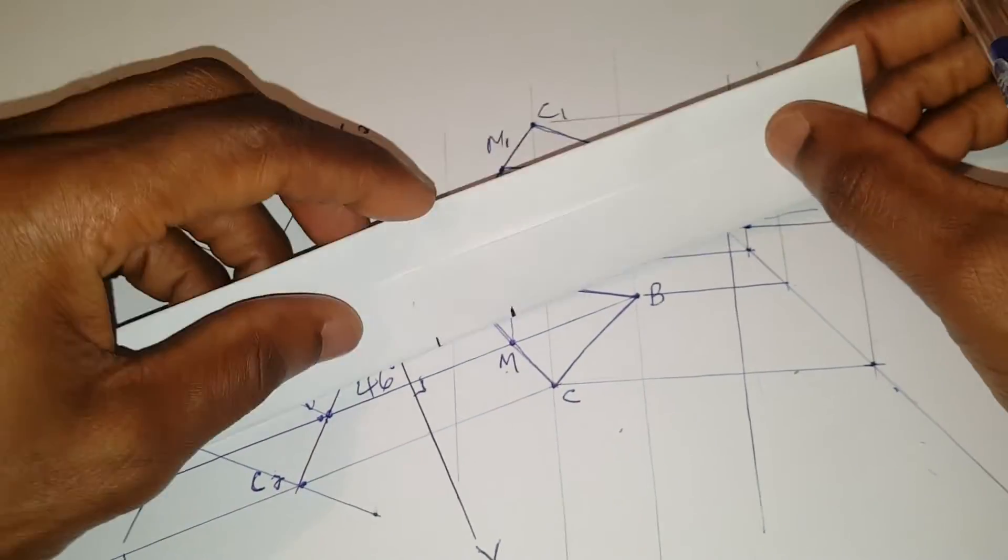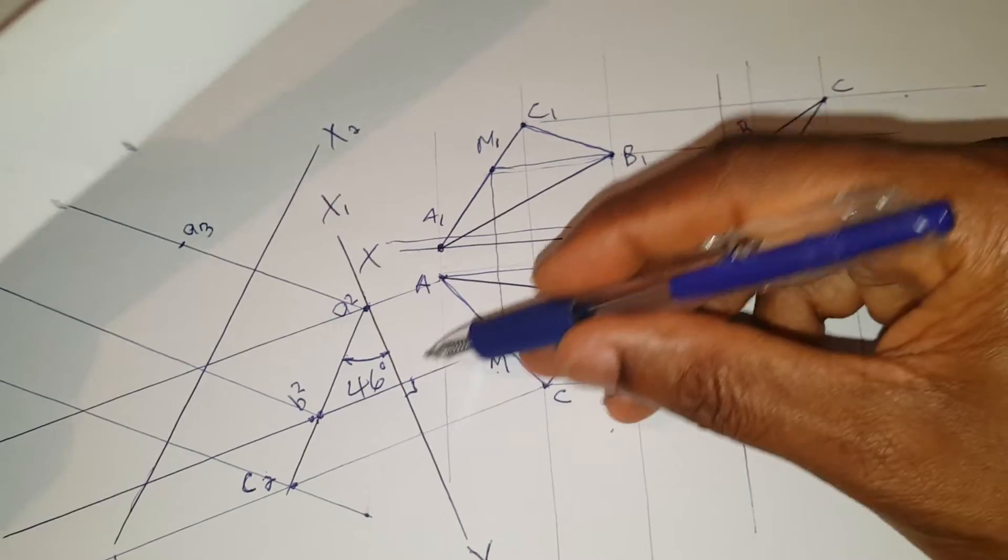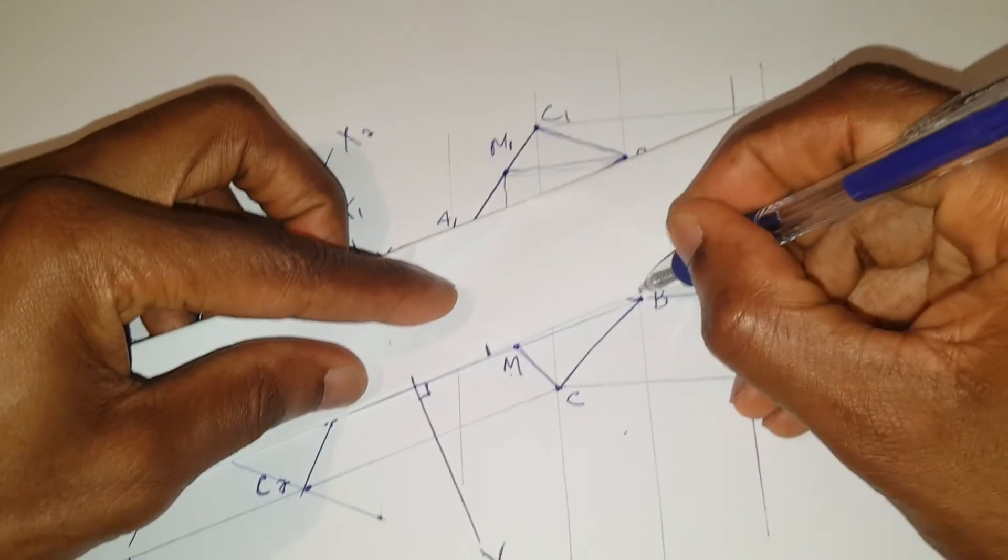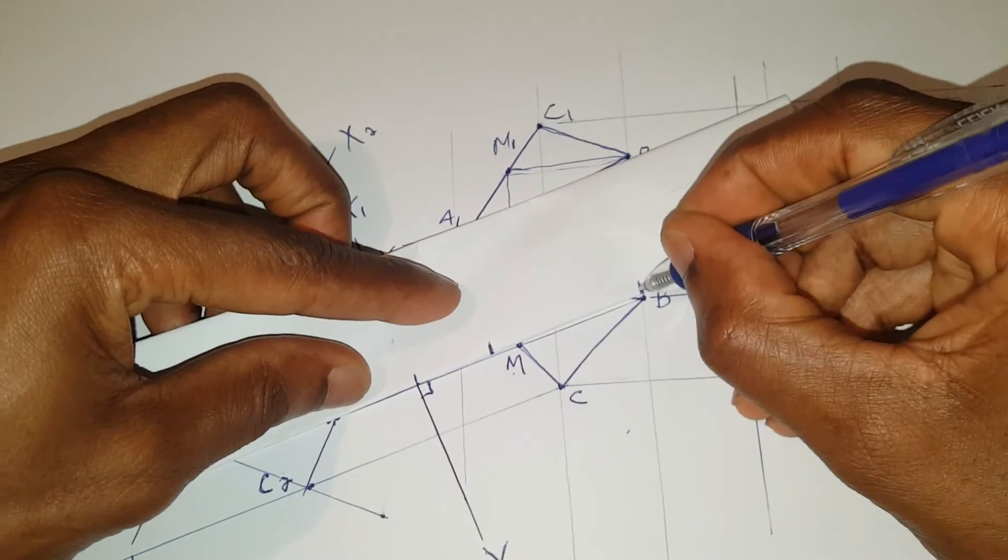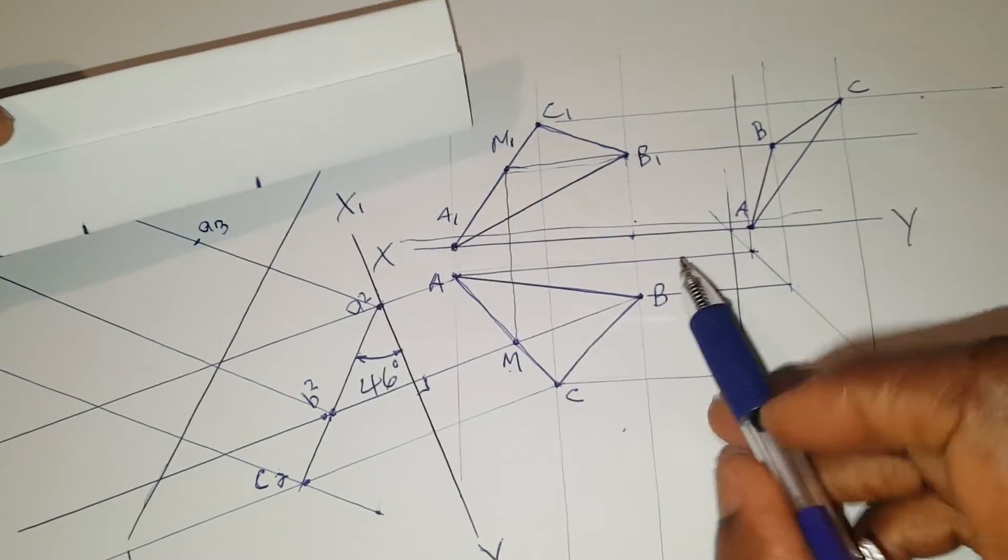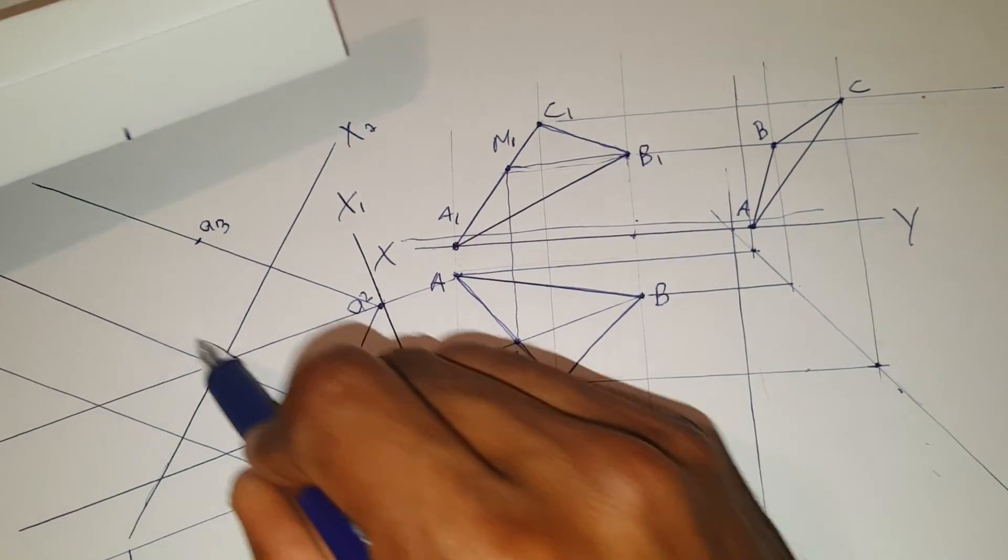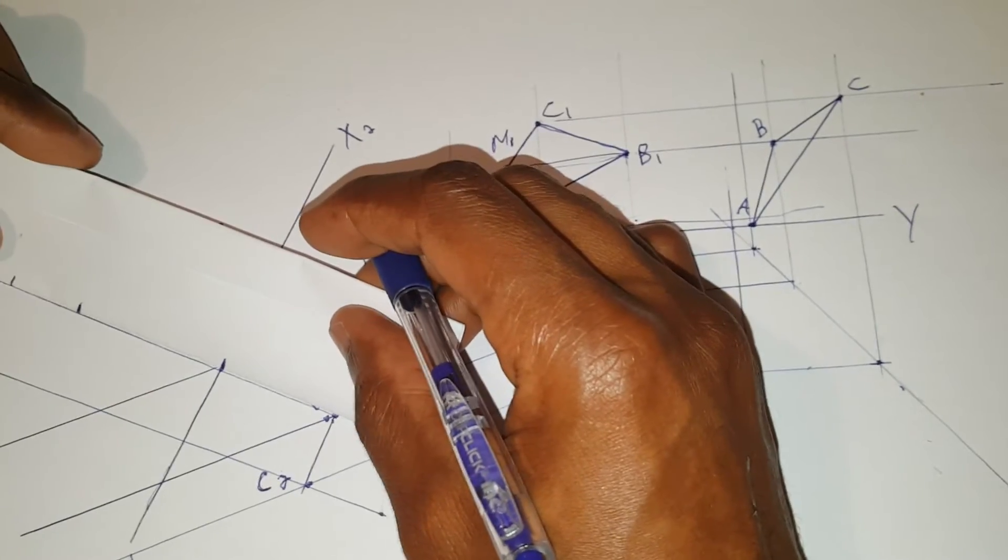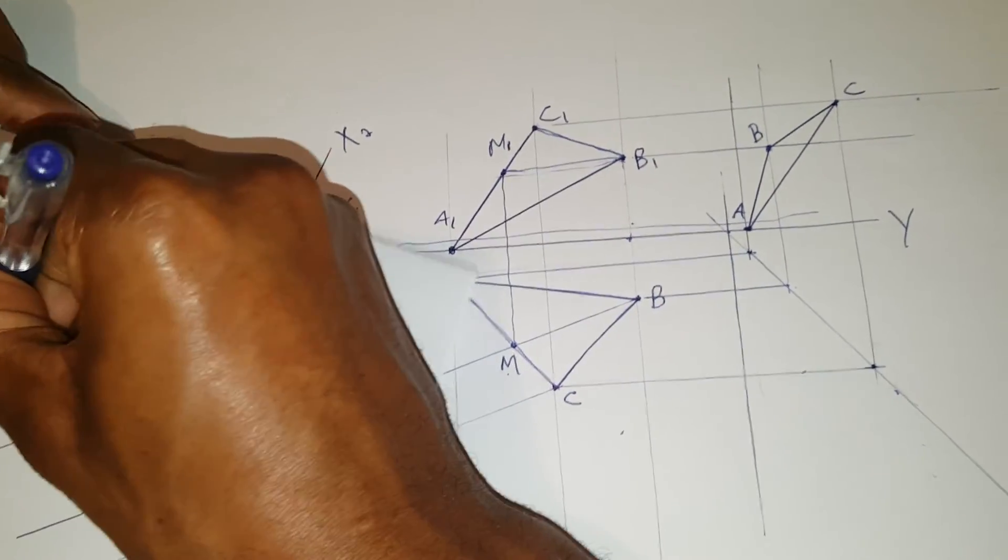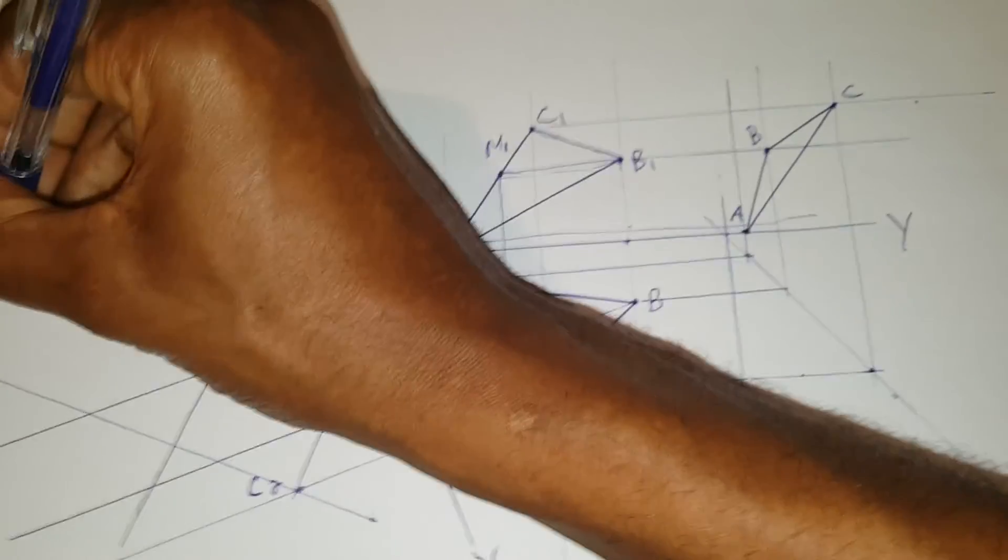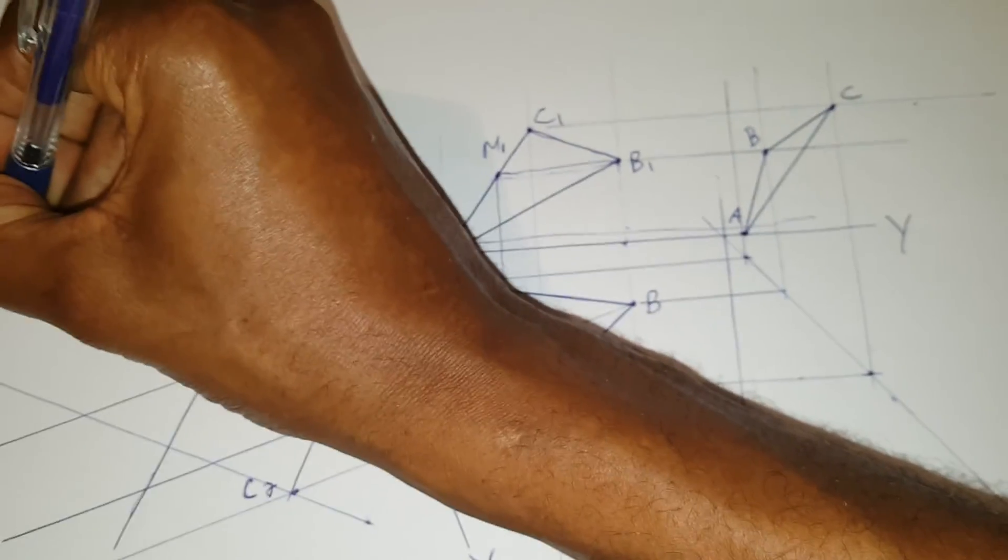B comes here. Starting here. That's B. Label this B3.